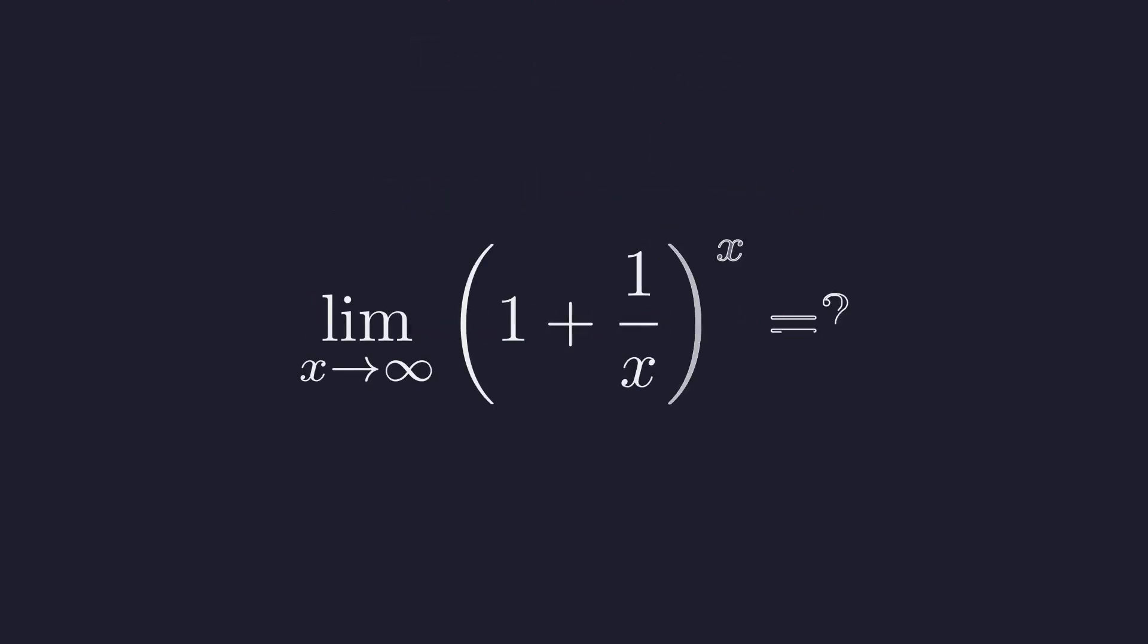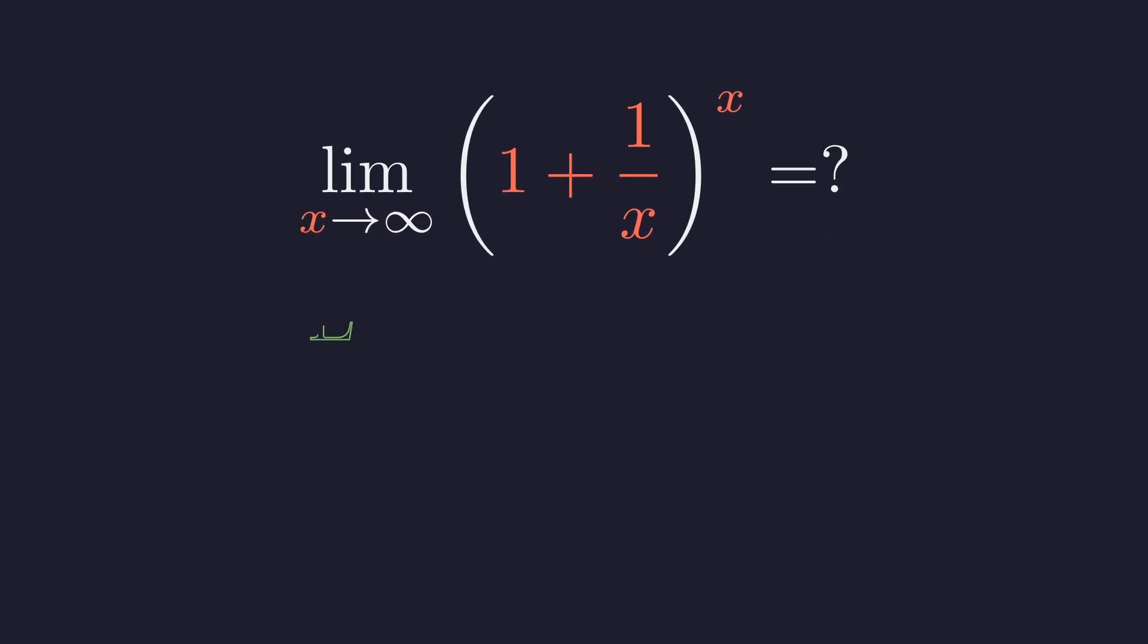Putting it together, we get this limit. A base that approaches 1 raised to an exponent that approaches infinity. Base goes to 1. Exponent goes to infinity. This is our precise mathematical formulation of 1 to the power of infinity. Based on everything we just discussed, we expect this limit to equal 1. Let's see if mathematics agrees.